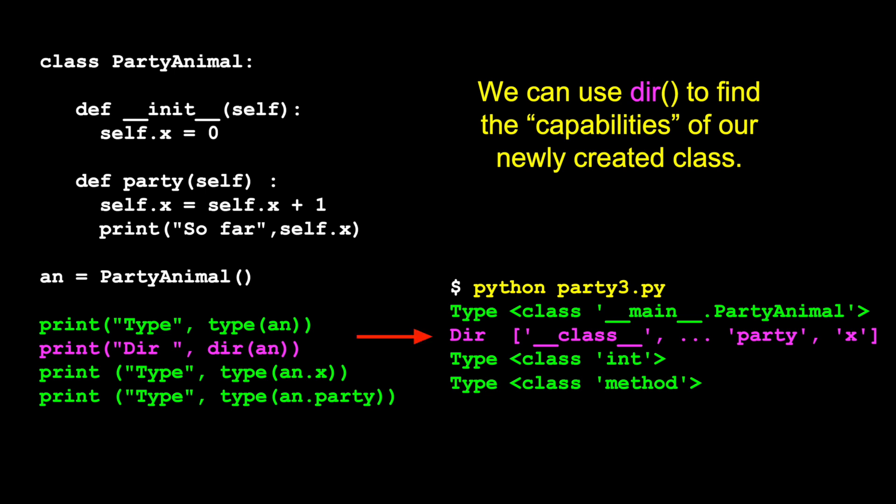And then we use the dir. Remember dir looks for capabilities. And again you will see a whole bunch of underscore things. They have meaning. You can look them up. But eventually you'll see the two things that you've put in it. One is the method party and the other is the attribute or field x. And again these are the things that you can say an.x or an.party. Because this dot is the object operator. The object lookup operator that says lookup in the object an the thing x. Or lookup in the object an the thing party.